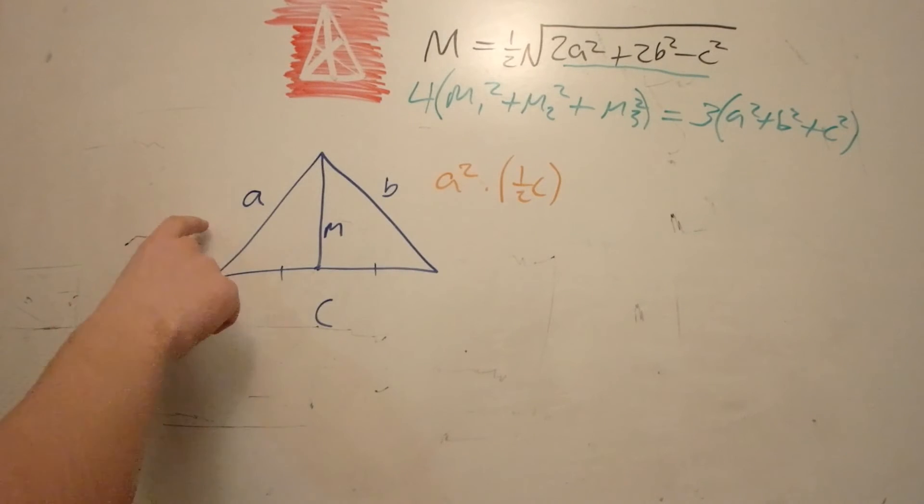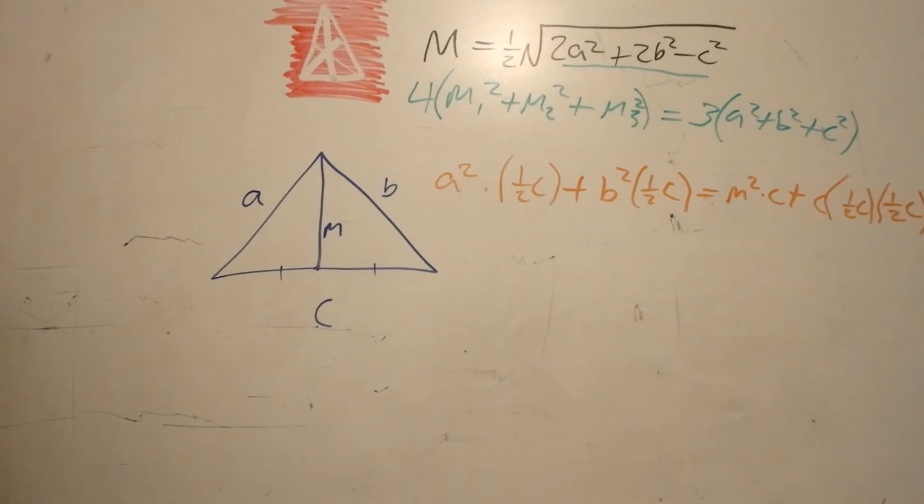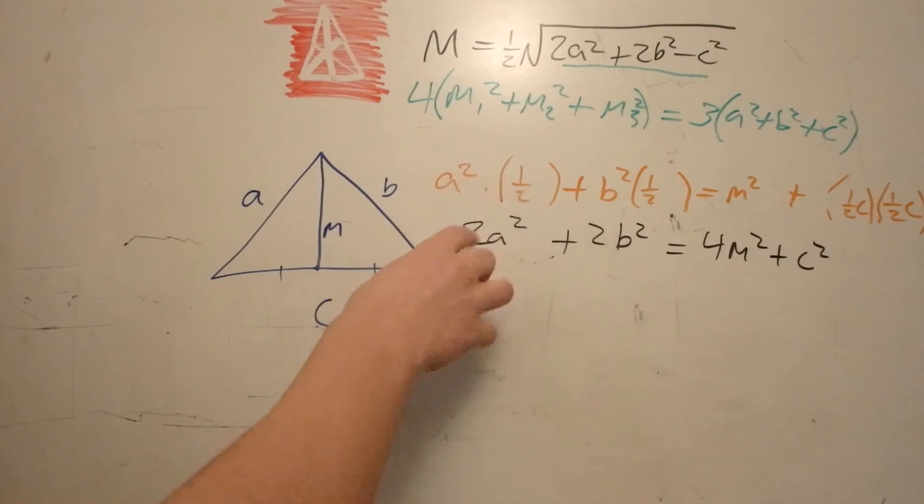So this is the same thing saying a squared times one-half c, and it's the same thing for b. Well, this one's obvious. It's just going to be m squared times c. So the first thing we're going to do is divide everything by c, and then multiply everything by 4.